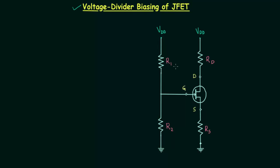Now there is one very important point regarding the JFET. We already know that in the case of junction field effect transistors, the gate current IG is nearly equal to 0A. This is the property of field effect transistors.